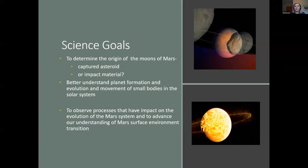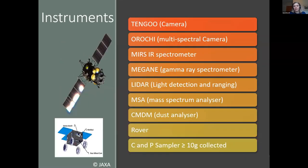However Phobos formed, it has been a witness to an enormous amount of stuff. Its position on the edge of the asteroid belt means it will have lots of asteroid material impacting it. We think it's going to be heavily space-weathered, have impacts from cosmic rays, bits of Deimos, and also — critically — actual pieces of Mars. These may be much less shocked than the Martian meteorites we have on Earth, potentially giving us the first Martian material that hasn't experienced massive shock.